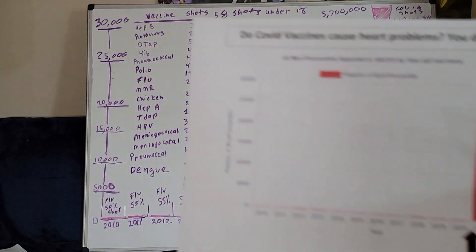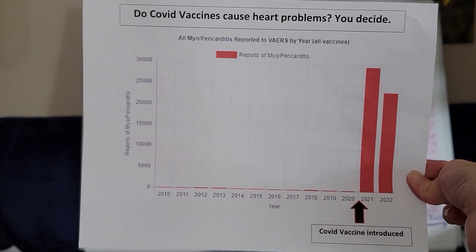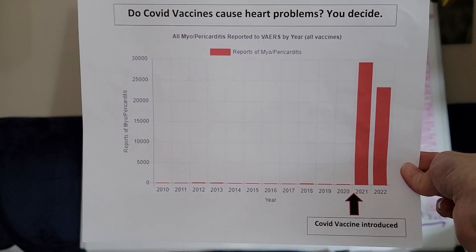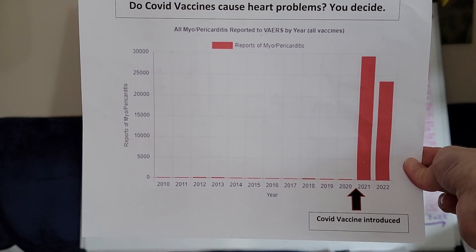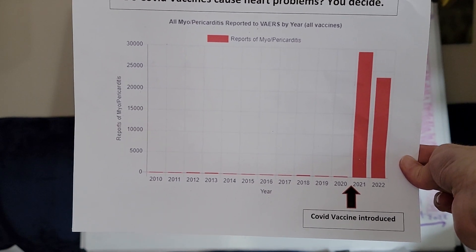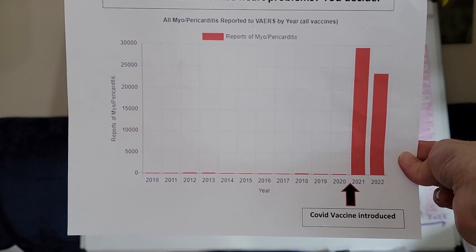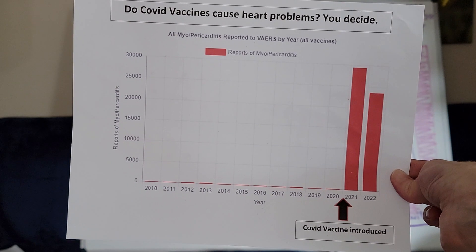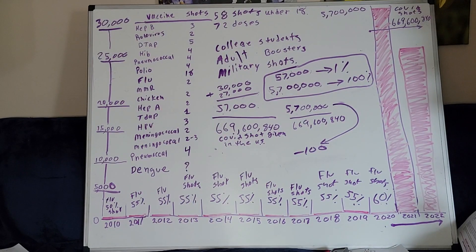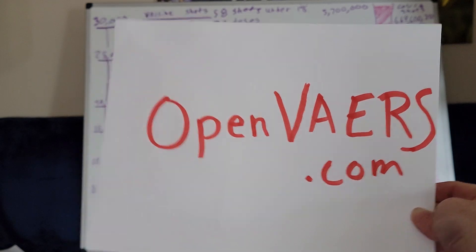Okay guys, I'm back and I want to talk about this bar graph. As you can see, this shows reports of myocarditis and pericarditis. You can see that when the COVID shots got introduced, the cases skyrocketed through the roof. The source came from openvares.com.